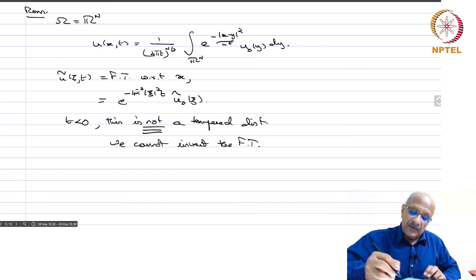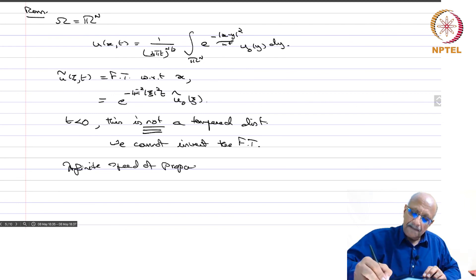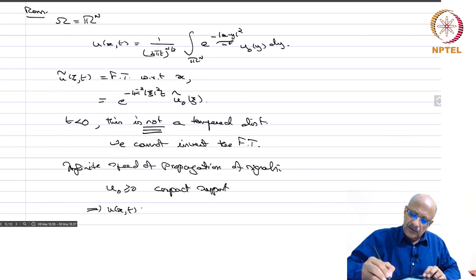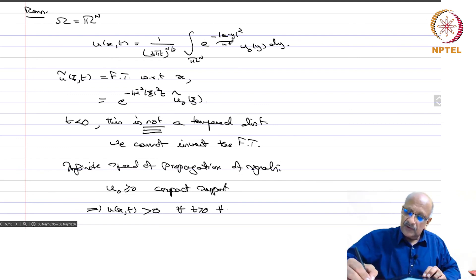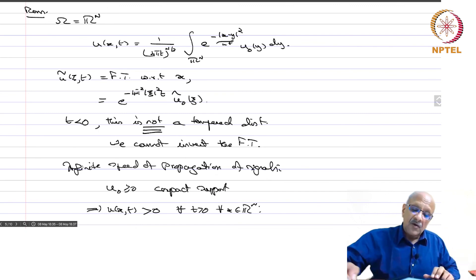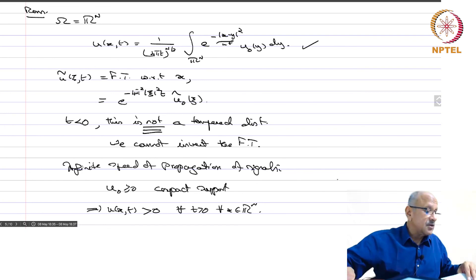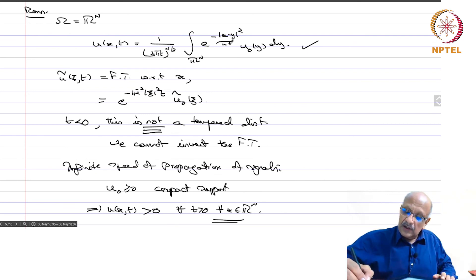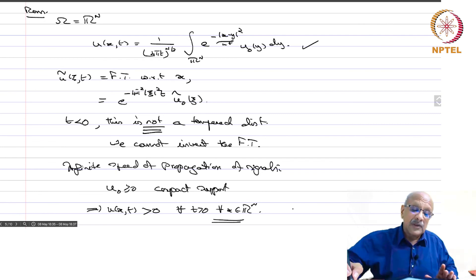We have already seen the infinite speed of propagation of signals: u_0 greater than or equal to 0 with compact support implies u(x,t) is strictly positive for all t positive and all x in R^n. This comes from the explicit formula. Therefore this is called the infinite speed of propagation of signals. This is about the heat equation — how we solve it for any data, and infinite smoothness just comes from the theory of semigroups for maximal dissipative self-adjoint operators.